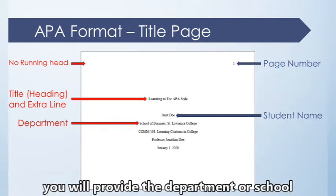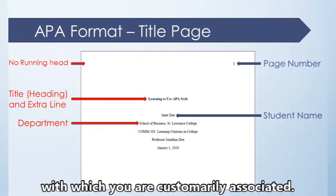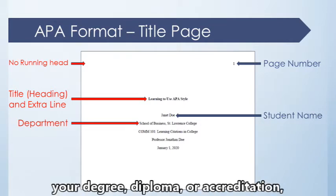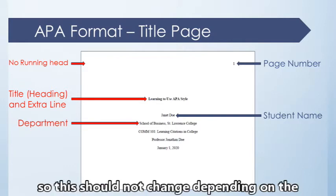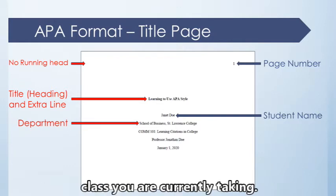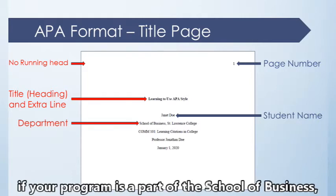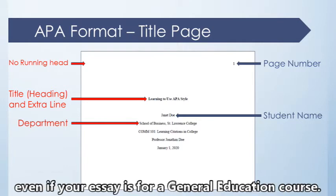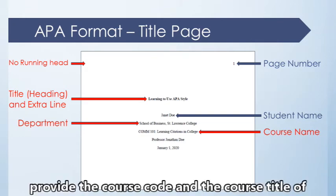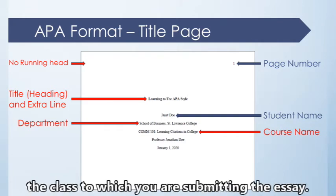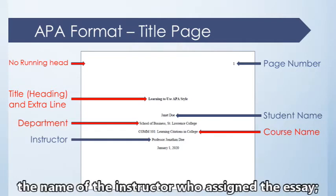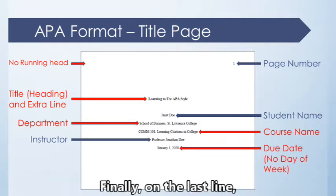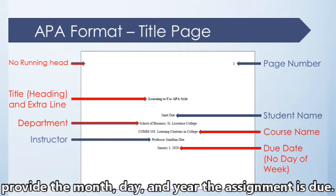On the affiliation line, you will provide the department or school with which you are customarily associated — the one ultimately providing your degree, diploma, or accreditation. For example, if your program is a part of the School of Business, you would write 'School of Business, St. Lawrence College,' even if your essay is for a general education course. Following that, provide the course code and course title, then the name of the instructor using whatever title they indicate is suitable, and finally the month, day, and year the assignment is due.